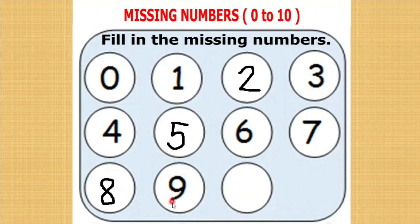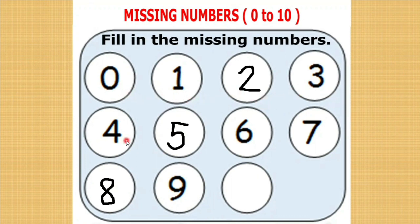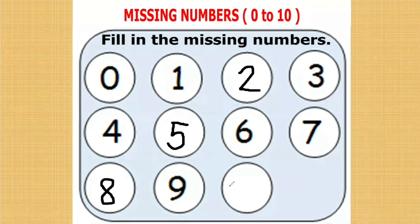After 8, 9 is there. After 9, the number is missing. What comes after 9? To do this, keep 9 in your mind and do the forward counting from 0. 0, 1, 2, 3, 4, 5, 6, 7, 8, 9, 10. What comes after 9? 10. After 9, 10 will come. Done.